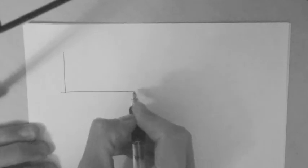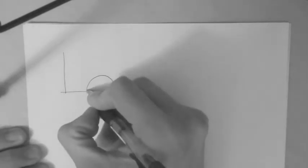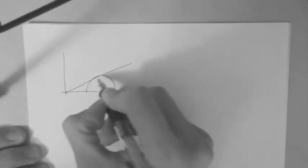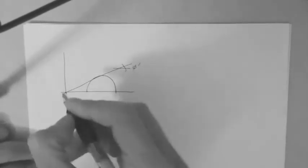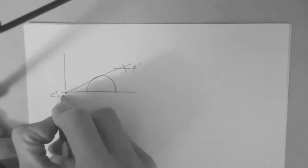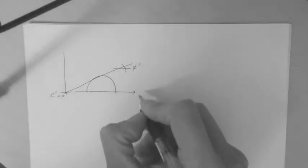Alright, we left off having the Mohr circle associated with the active condition, which touches the failure envelope. And we had said that C' was 0 for the backfill soil. This is sigma prime and this is tau.